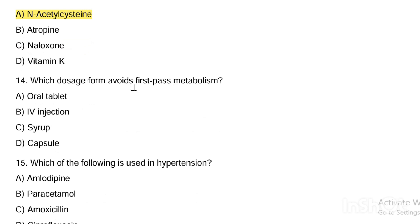Next question. Which dosage form avoids first-pass metabolism? Option A, oral tablet. Option B, IV injection. Option C, syrup. Option D, capsule. Answer: IV injection avoids first-pass metabolism.